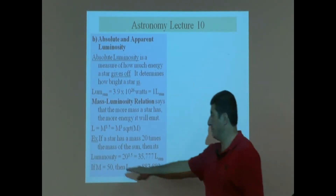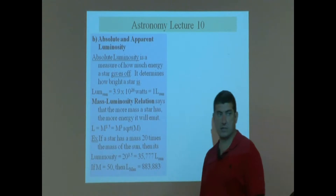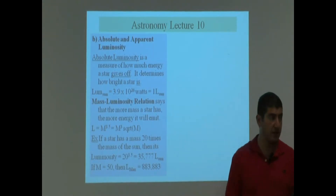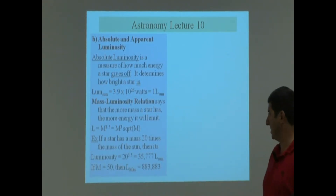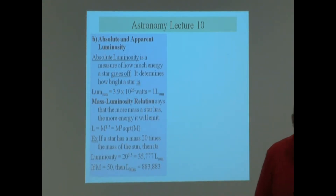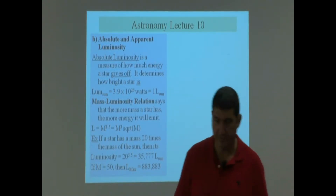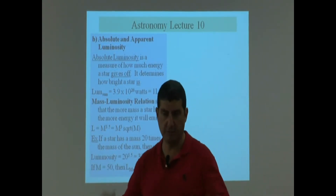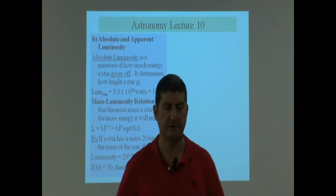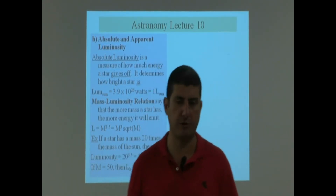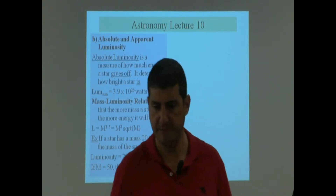If the mass is 50, then what is the luminosity? You take 50 and raise it to the power 3.5 — same process, basically.